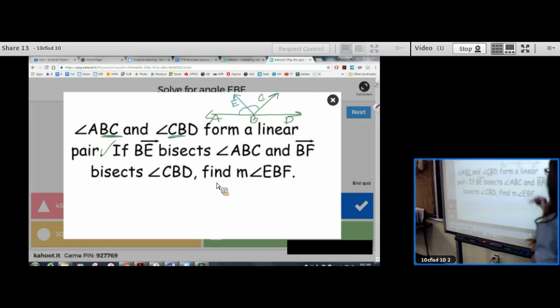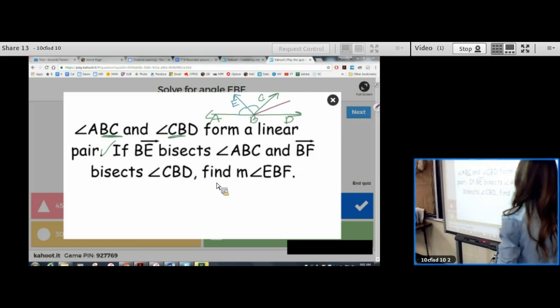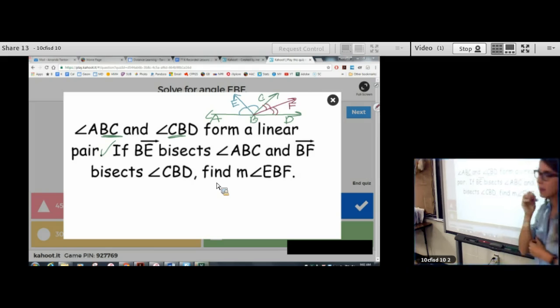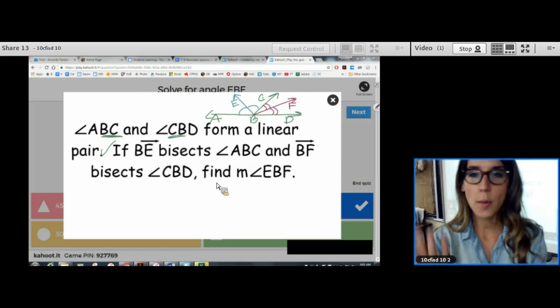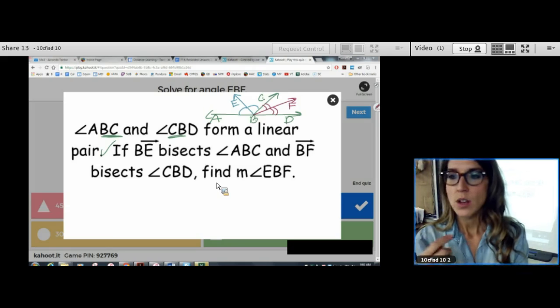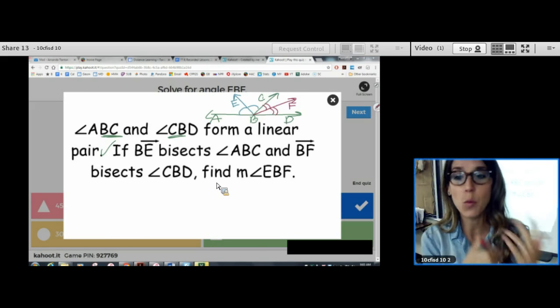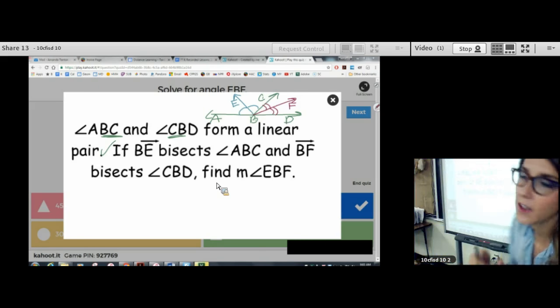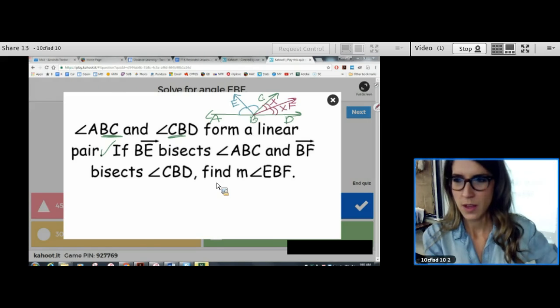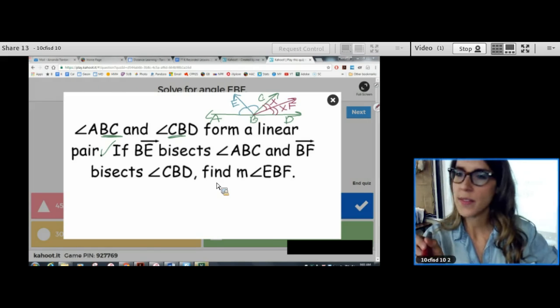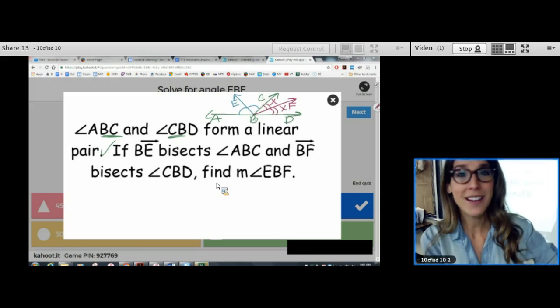DF bisects CBD. Draw an angle bisector. Call it DF. And, I can't use a single arc. Now, I need to use a double arc. Now, normally, I tell you in a problem like this, just call the smallest thing x and work from there. Okay. Go ahead. So, if I call this x, then I would call this x, oh no. But, now, I don't know what to call the other two. Because, I don't really know what they are in relation to this. So, that one kind of didn't work. Sometimes, that doesn't work.